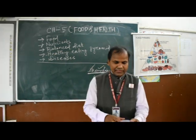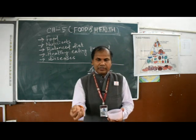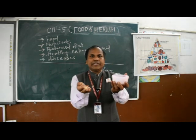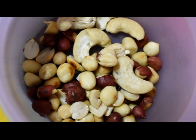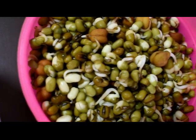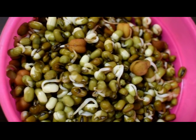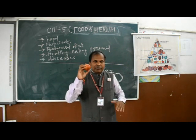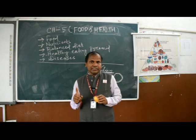Sources of iron include nuts such as cashew nuts and groundnuts. If you take these in your diet, you will not suffer from iron deficiency. Also, sprouted seeds and apples are good sources of iron — if you take one apple daily after your meal, you will not suffer from iron deficiency disease like anemia.